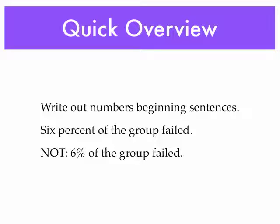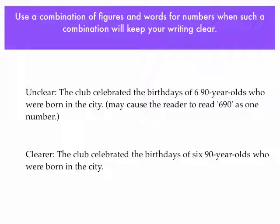And a quick overview about numbers when you're writing them: write out numbers that begin sentences. For example, 'Six percent of the group fail' — not the numeral 6. You can see that in this example. Use a combination of figures and words for your numbers, and that will help keep your writing clear. If you read the two sentences here, you'll see that one sentence is more clear than the other. I'll also try to post this particular PowerPoint for those of you who are interested in reading it more closely.